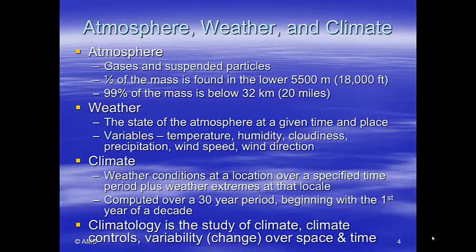Weather is the state of the atmosphere as defined by temperature, pressure, humidity, wind speed, and wind direction at a specific time and place. Climate is the average weather averaged over a specific period — we average the weather over a 30-year period, beginning with the first year of the decade. Meteorology is the study of the weather, and climatology is the study of the climate.